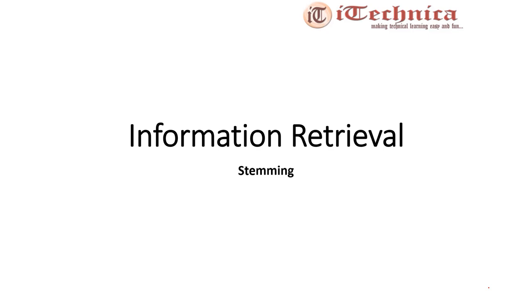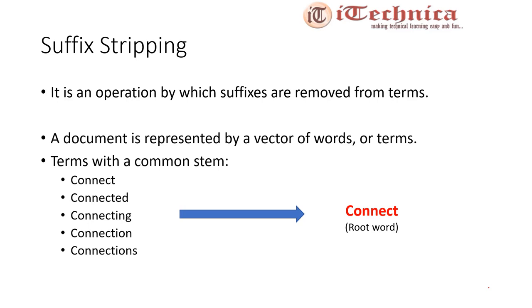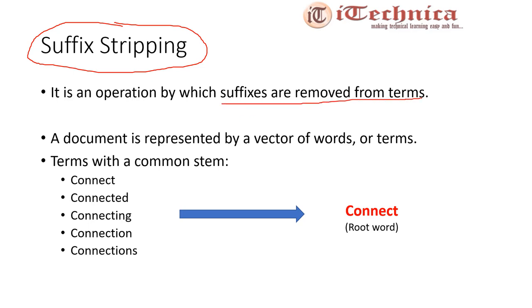In this video lecture we are going to discuss our next topic after normalization, which is called stemming. Before going into stemming, let us first understand what is suffix stripping. Suffix stripping is simply an operation by which suffixes are removed from the terms. These terms are what we got after normalizing a token, and when we remove suffixes from them it is called suffix stripping.